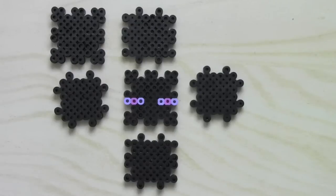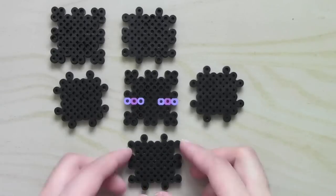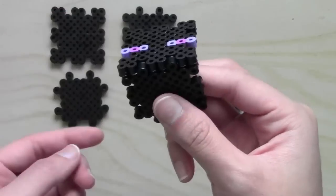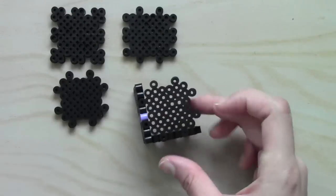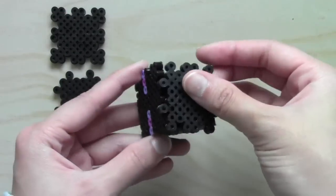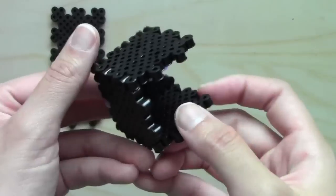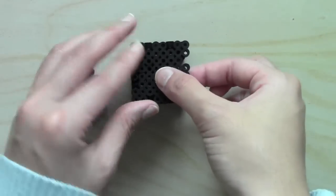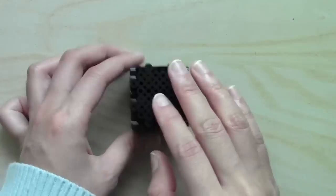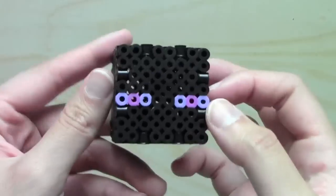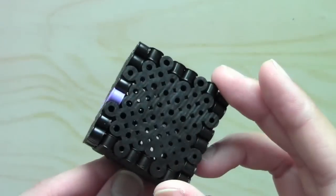After you're done ironing, these are the pieces that you should have for the head. Once again, I call these jigsaw projects because they will clip in perfectly together. And now you've assembled Enderman's head.